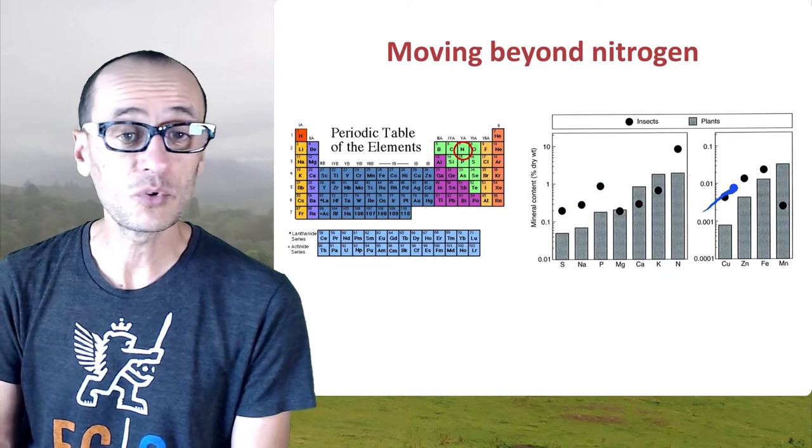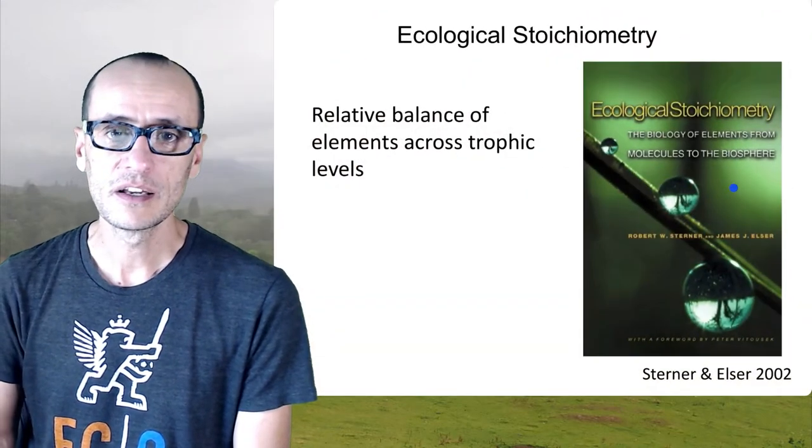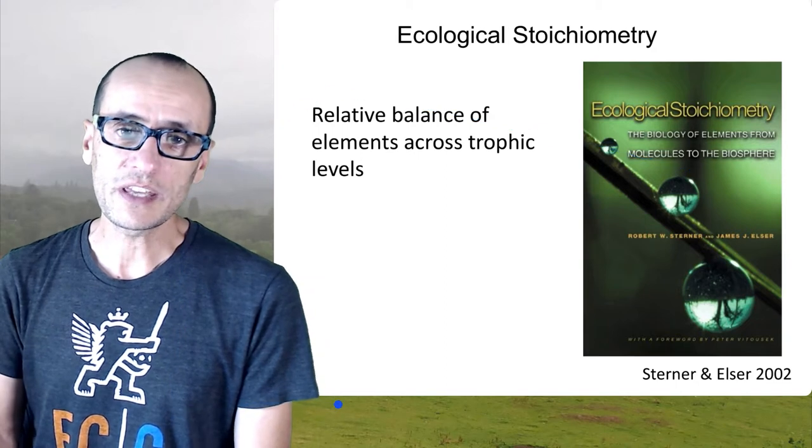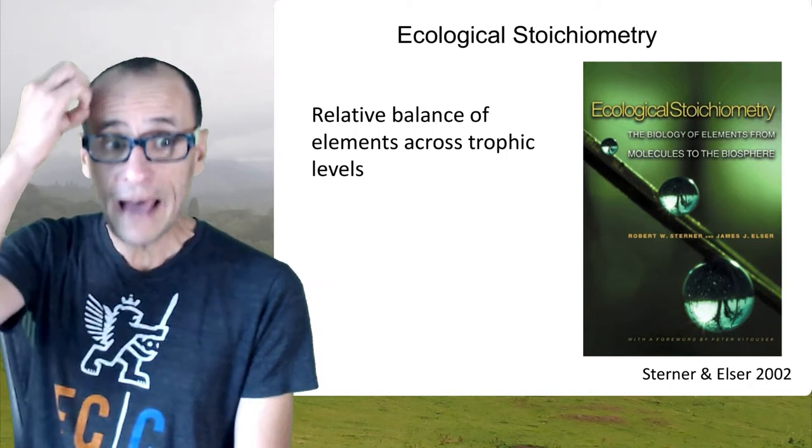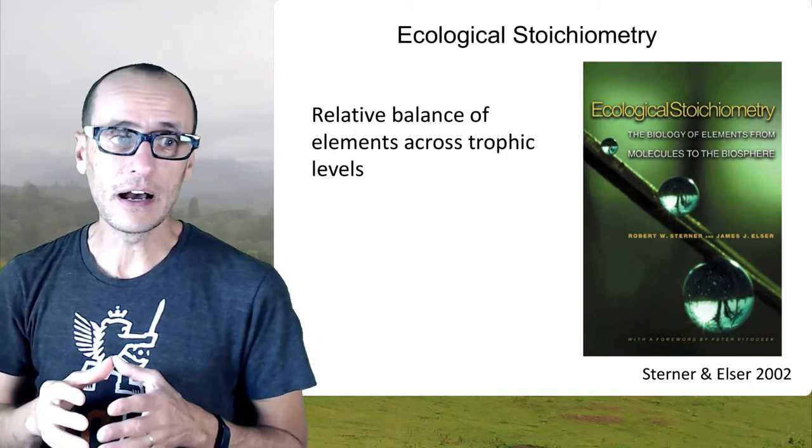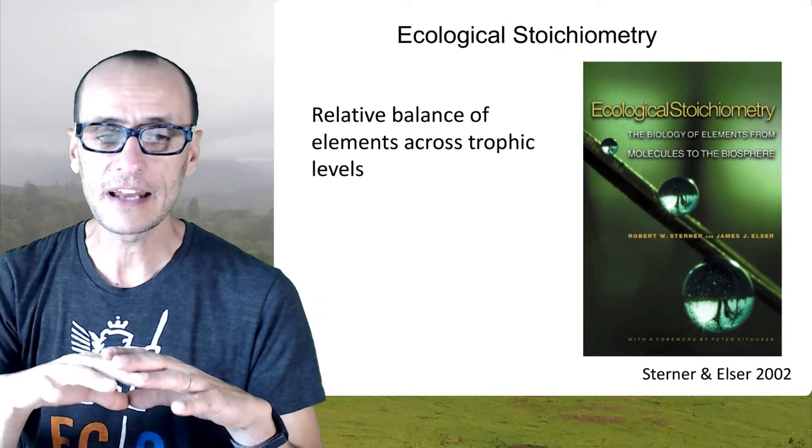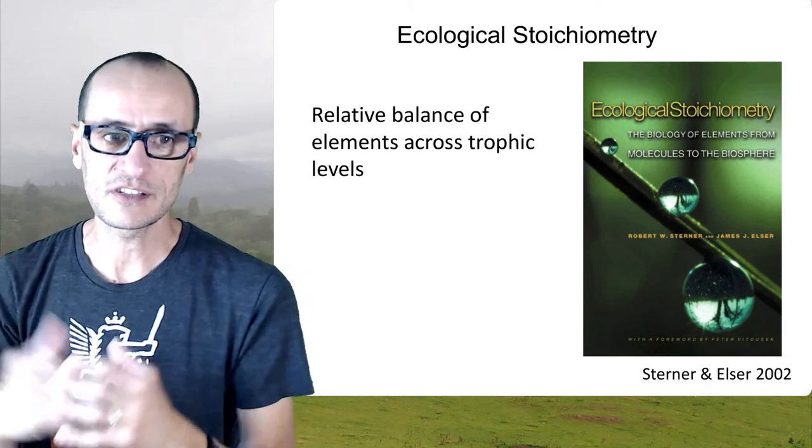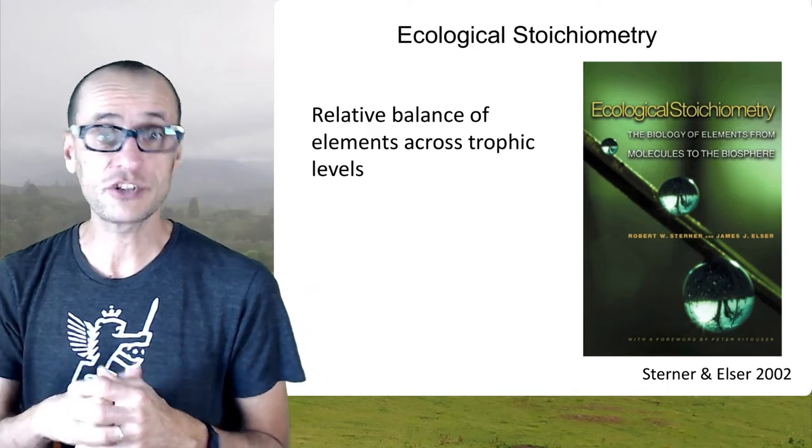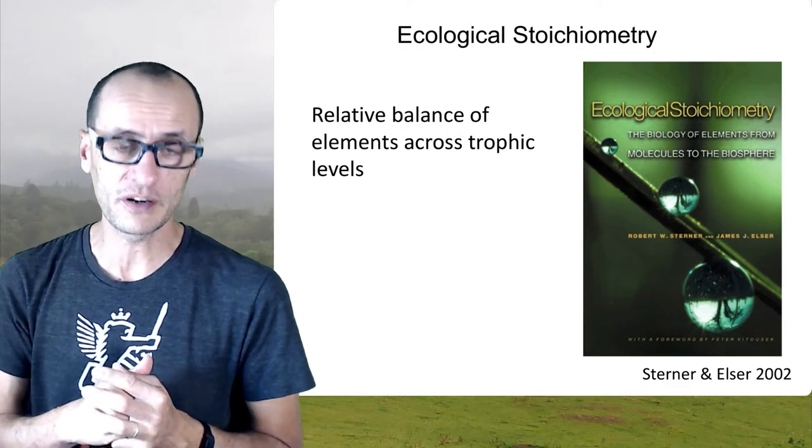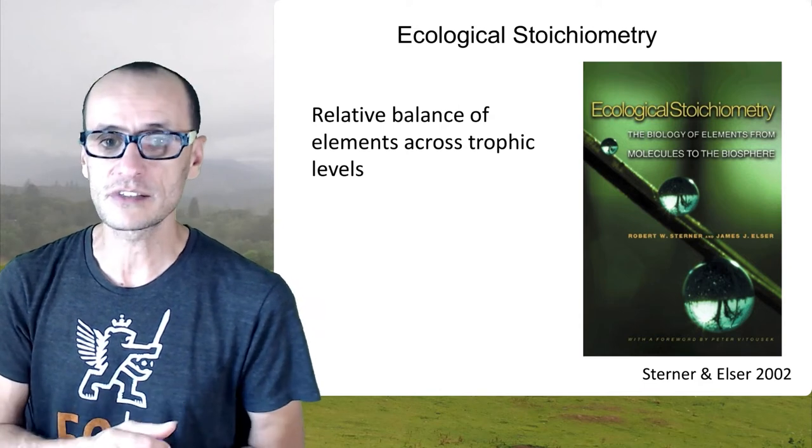So this field of ecological stoichiometry tries to understand the relative balance, not just the absolute amounts, of the key elements in organisms across different trophic levels. And what I mean by that is plants versus their herbivores, just as an example. It helps understand plant-herbivore interactions or consumer resource interactions more broadly. And specifically, what the constraints are that nutrient deficient food places on consumers.